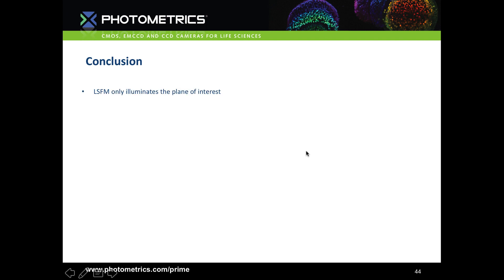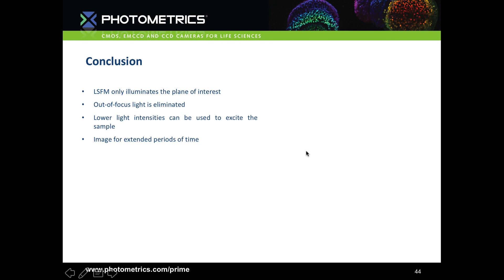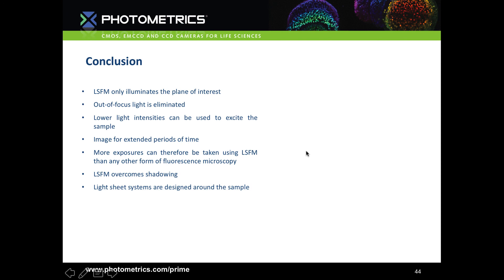In conclusion, lightsheet fluorescence microscopy only illuminates the plane of interest, minimising photobleaching and photodamage. By eliminating out-of-focus light, lower light intensities can be used, further reducing photodamage. It allows imaging for extended periods — more exposures than any other form of fluorescence microscopy — and can overcome shadowing for higher quality data. Lightsheet systems are designed around the sample, so a large variety of systems have been developed. However, data handling remains the biggest challenge, and although data compression is being worked on, there is still a lot more to be done.